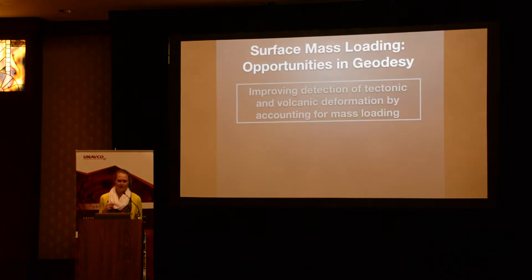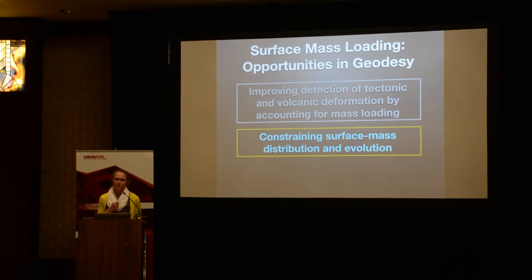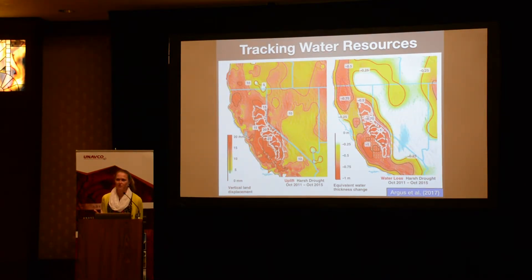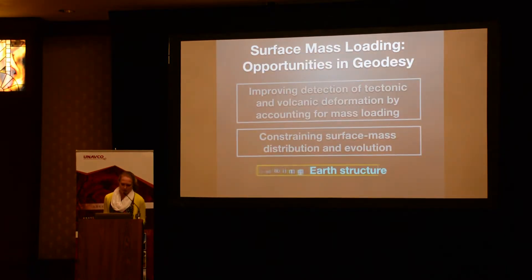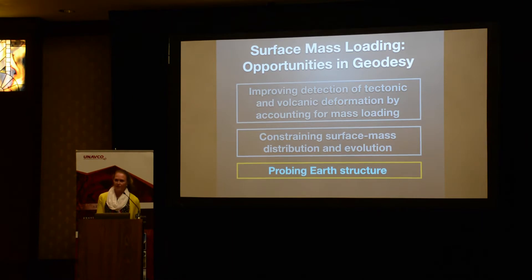On the flip side, exciting sub-disciplines of geodesy are emerging to explore mass load response as a signal rather than as noise. A prime example is constraining surface mass changes by examining the deformation patterns produced by the loads. We can, for instance, use dense GPS networks to track the storage and movement of water through landscapes, which can inform the management of our limited water resources, especially during periods of extended drought. Another important application is the opportunity to exploit loading signals to probe the material properties of Earth's interior across a range of spatial and time scales — in other words, geodetic tomography.